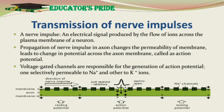Now, the process of transmission of nerve impulse. A nerve impulse is an electrical signal produced by the flow of ions across the plasma membrane of a neuron. Propagation of nerve impulse in nerve cells, i.e., axon, changes the permeability of the membrane. This change in permeability causes a change in the potential across the axon membrane. This change in resting potential is called action potential. An action potential is generated when the membrane is depolarized.